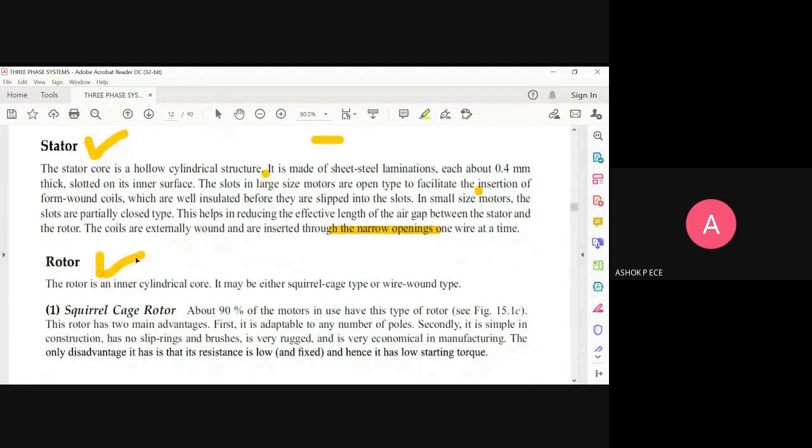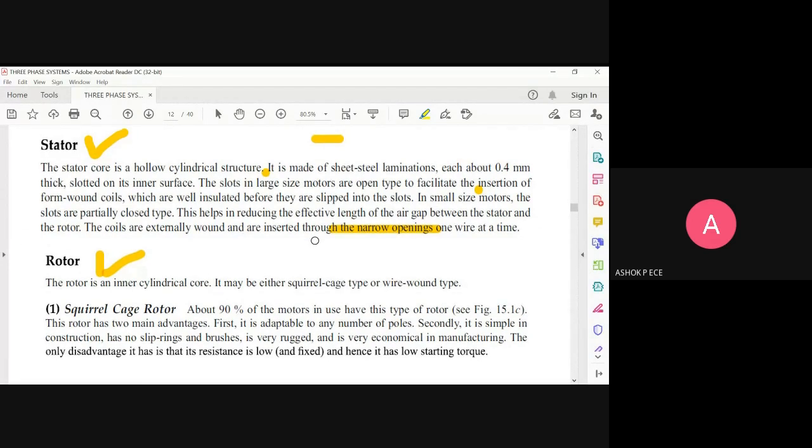Now the rotor. The rotor is the innermost cylindrical core. You have two cylinders placed like concentric circles - the outermost is the stator, the innermost is the rotor. The rotor is inside the stator. We have seen most motors have squirrel cage rotor.